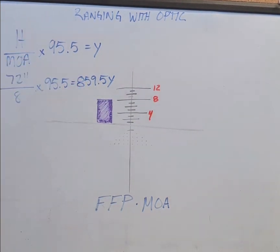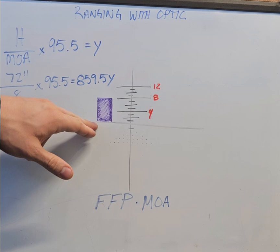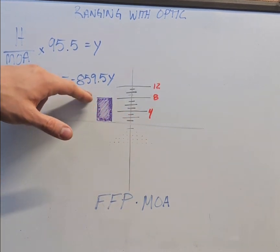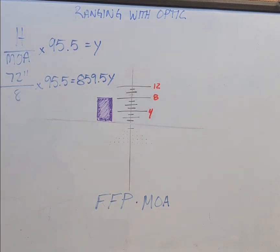And that's the distance to your target. Again, just a key thing is knowing the size of your target, aligning the bottom of the target up with the zero line of your reticle there, measuring up how many minutes that is, and plugging it into your equation. Thanks for watching.